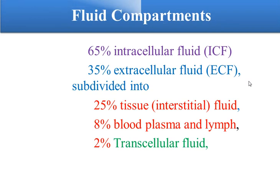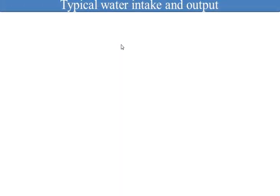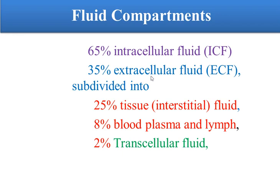Where do we find fluid? Fluid can be found in many compartments, either intracellular or extracellular. 65% of fluid is found in intracellular fluid, while 35% is found in extracellular fluid. Of the extracellular fluid, 25% is in interstitial tissue, 8% in blood plasma, and 2% in transcellular fluid — meaning fluid like cerebrospinal fluid, pericardial fluid, or synovial fluid in the joints.